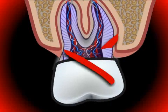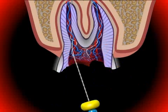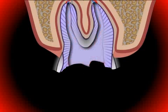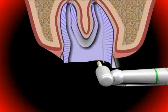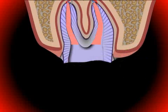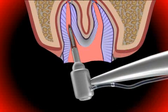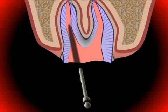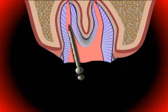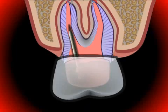You can find out more in the video entitled Core Buildup. The important thing for a good core buildup is the fastening of the root post in the root of the tooth. This requires a good root canal treatment and also a sufficiently deep excavation, each covered in their respective videos.